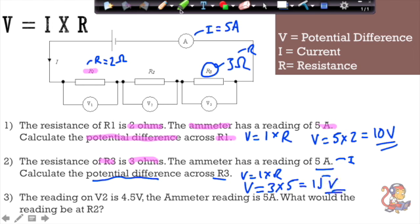On the second one, I have to rearrange the equation. So this is more likely for higher tier. They rarely ask you to rearrange for foundation, but do bear it in mind. The reading on V2 is 4.5 volts. So this is my V value over here, and this is 4.5 volts.